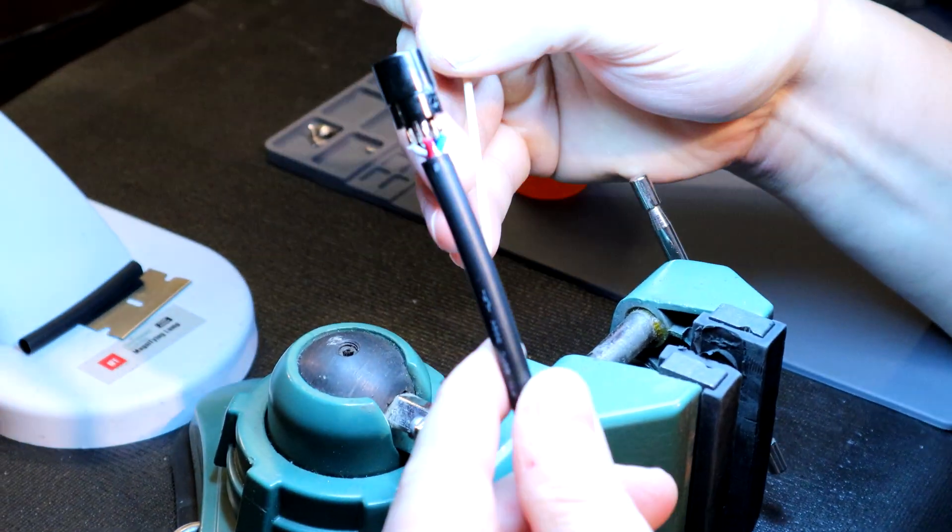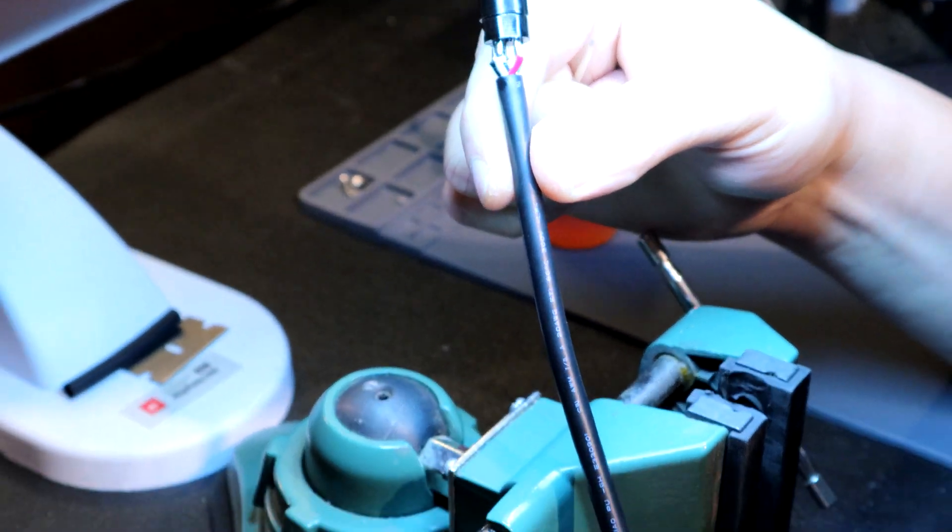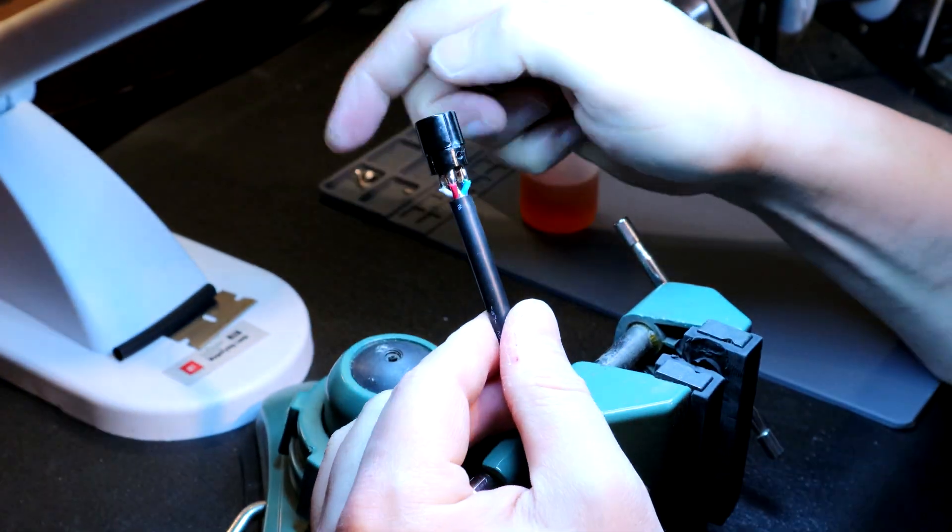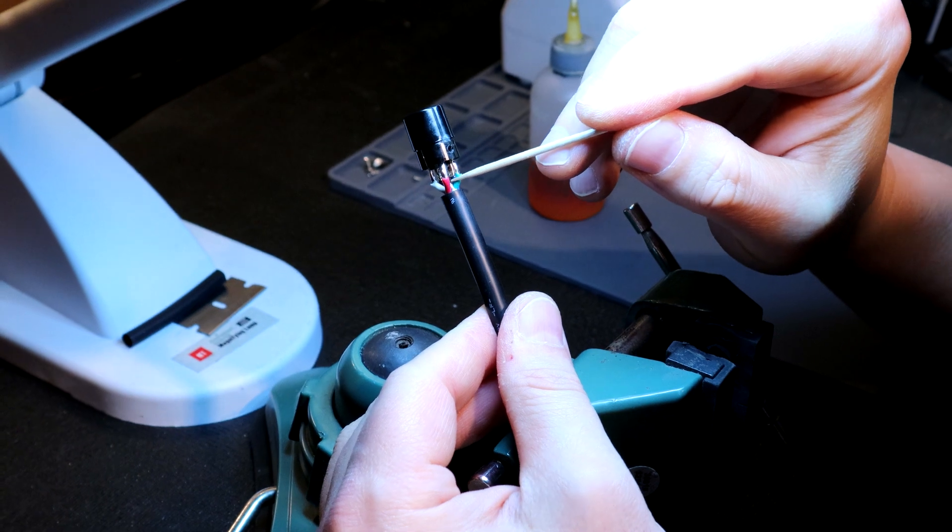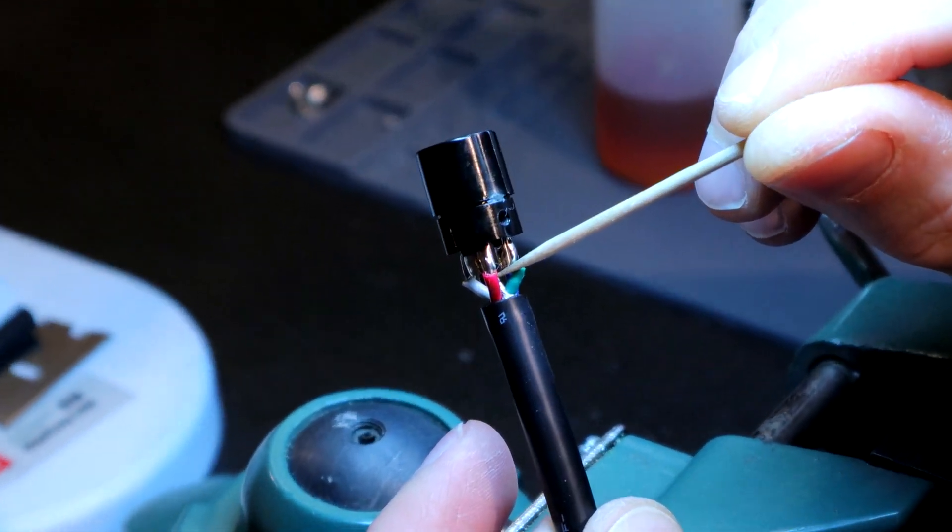This cable right here is 20-gauge, it's double shielded, and it's 5-lead. The sixth terminal on this is for your shield drain, and you can see that soldered right there.